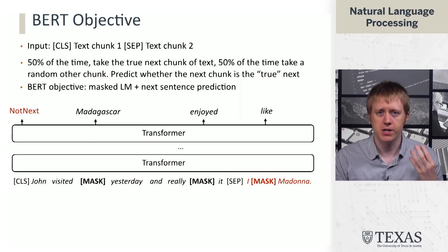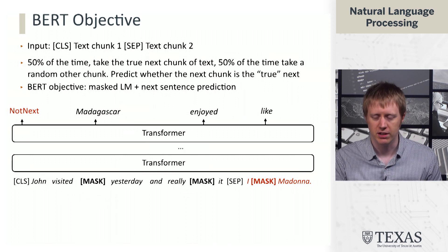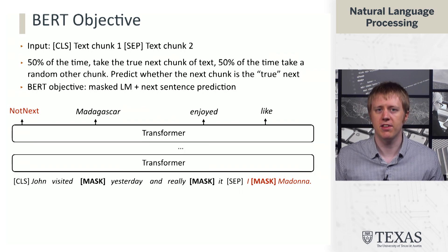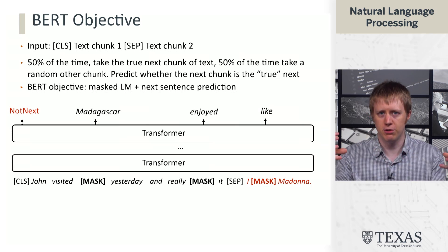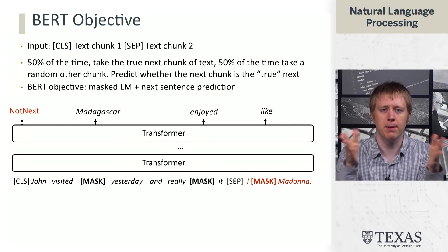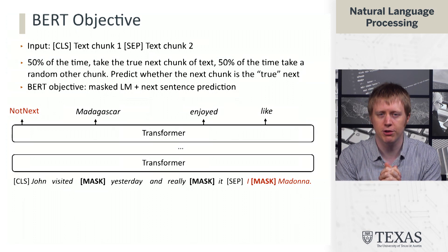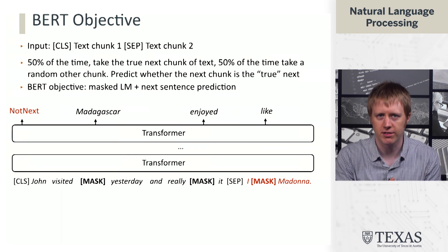The overall BERT objective combines masked language modeling and next sentence prediction. It turns out in some future work that the next sentence prediction part is not so important. But this gives you the intuition for how we get the model to look at all this context and understand tokens in a deeply bidirectional fashion — where to figure out 'Madagascar', you want to look at everything before and after it — and how that will be the foundation for building classifiers on top of BERT. That's the end of this segment.